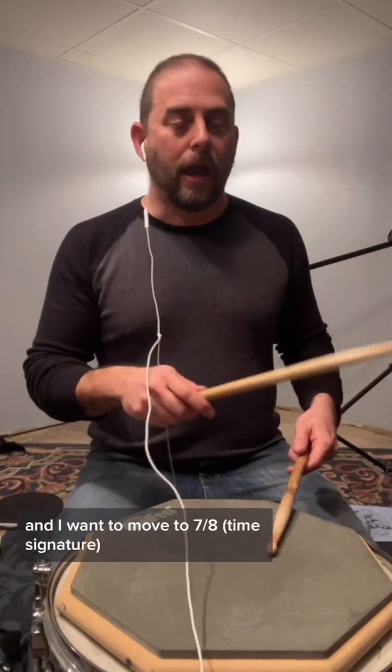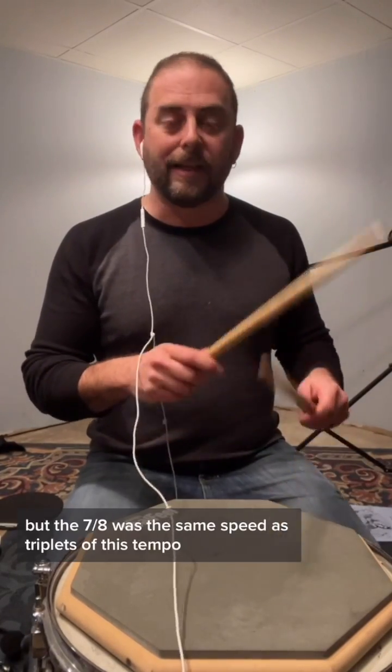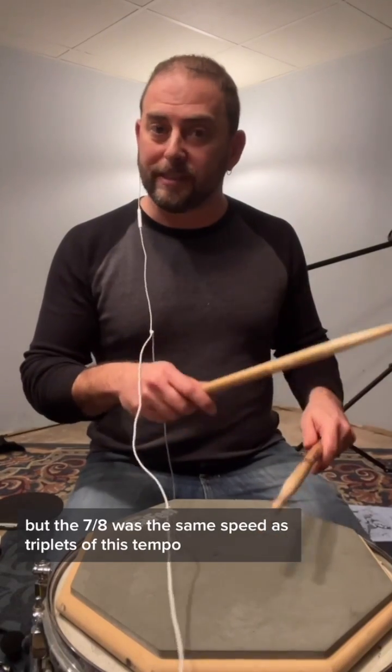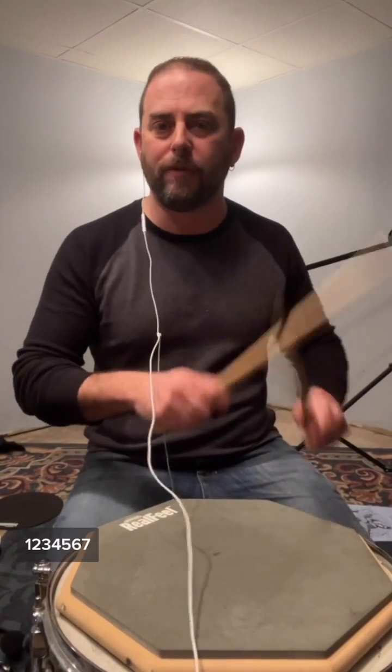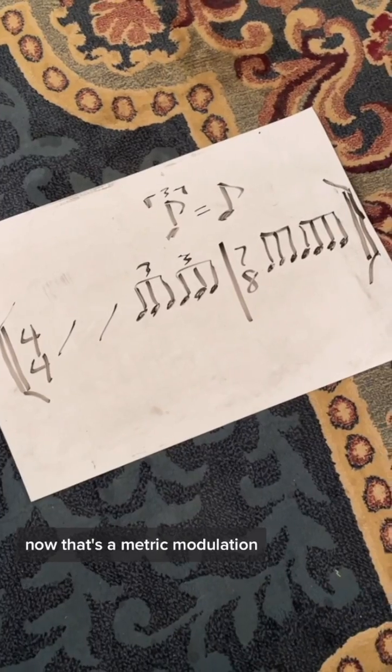Okay, so stay with me. Imagine we're playing with a band, and I want to move to seven-eighth. But the seven-eighth was the same speed as triplets at this tempo. So four and one and a two and a one, two, three, four, five, six, seven, one, two, three, four, five, six, seven, one, two, three, four, five, six, seven, one, two. Now that's a metric modulation.